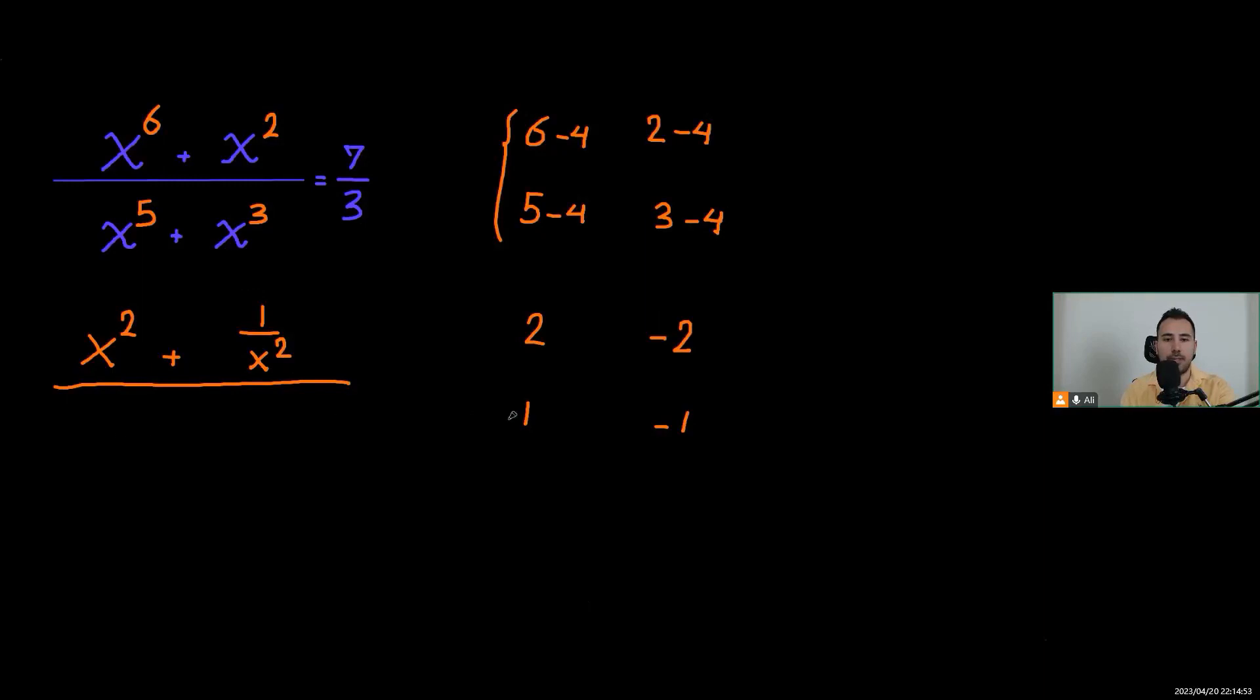And then we will have x plus one over x equals seven over three. It looks so much better, it looks promising. Now the numerator looks as if it's almost the denominator squared, right?